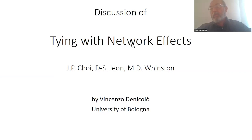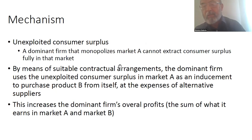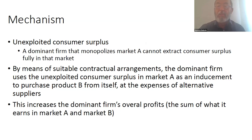Discussant: I'd like to thank the organizers for letting me discuss this very nice paper — I learned a lot by reading it, and it's a great contribution to the theory of tying. As far as I can tell the analytics is fine. In my discussion I will focus on the ideas underlying the paper. The basic mechanism, as Mike explained, is based on the notion of unexploited consumer surplus — the idea that for some reason, monopolies cannot extract all the surplus from consumers in a market, and therefore that creates scope for imposing contractual restrictions in other markets that may be profitable.